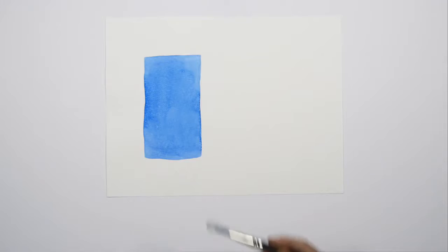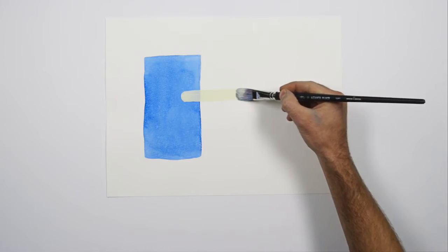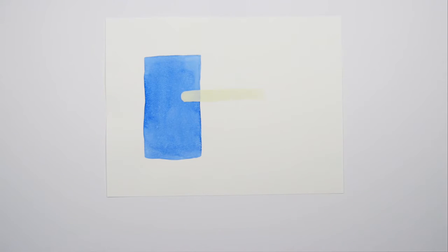ART masking fluid has a yellowish color which makes it easy to see when it needs to be removed, but this means it needs to be removed soon after it's dry so that it doesn't stain the paper or become harder to remove.